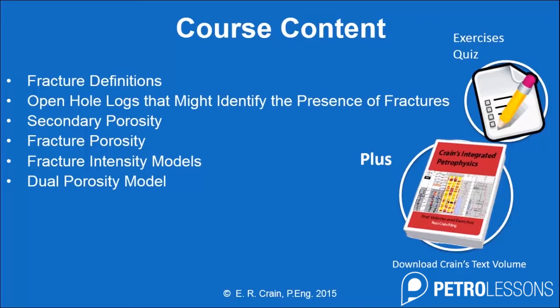We can, of course, run all kinds of high quality logs for fracture identification, such as the formation micro imaging log and the televiewer logs, both of which can identify fractures very well. We'll also define a term called secondary porosity index, which is a log analysis term, and we'll compare it to the secondary porosity as seen by geologists. We'll calculate fracture porosity and fracture permeability, and we'll calculate a thing called fracture intensity from open hole logs, so that we can get an idea of just how many fractures might be present.